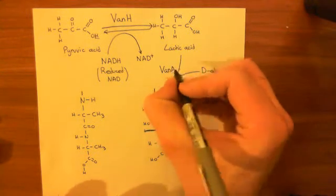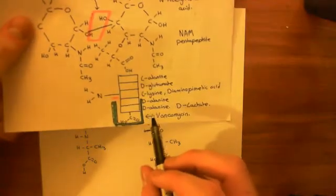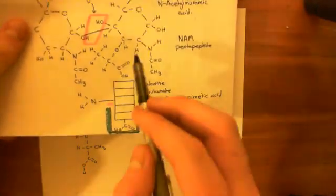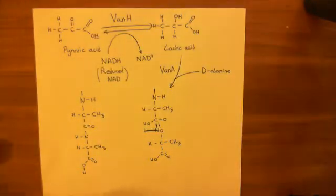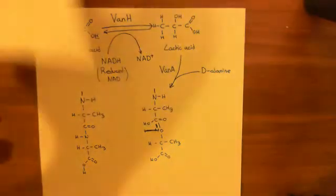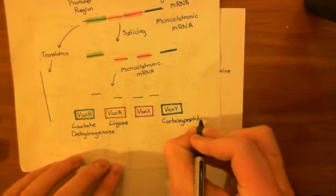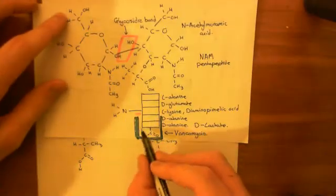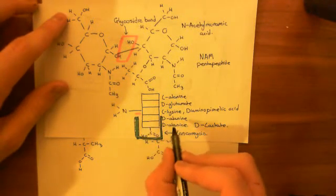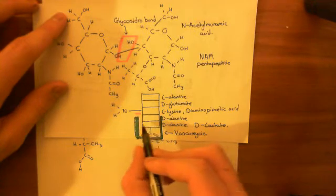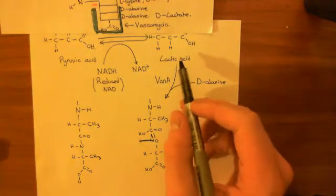Now, we need to talk about how you remove that final D-alanine group from the N-acetylmuramyl pentapeptide. The enzyme that does that is VAN-Y, which is known as a carboxypeptidase because it chops off the terminal amino acid at the carboxyl end of a polypeptide. VAN-Y is a carboxypeptidase — it will chop off that terminal D-alanine, and then you're ready for VAN-A to add on the D-lactate.